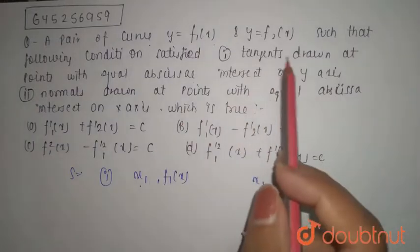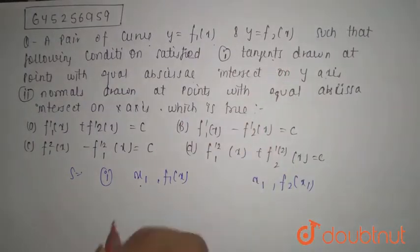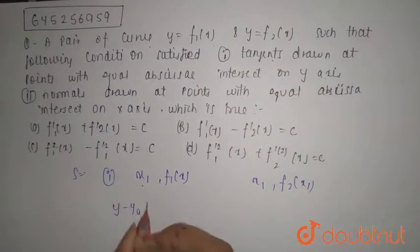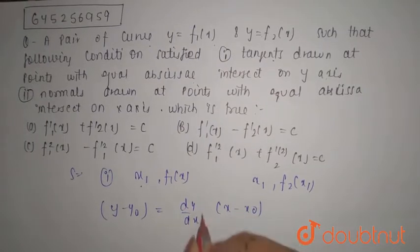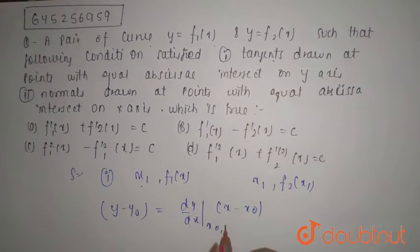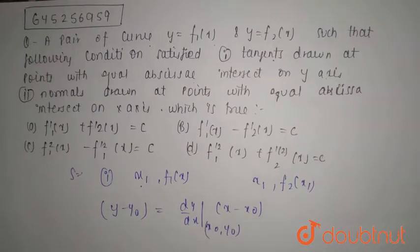Now, equation of a tangent is: y minus y naught equals dy/dx at the point x naught comma y naught, times x minus x naught. This is the simplest equation.